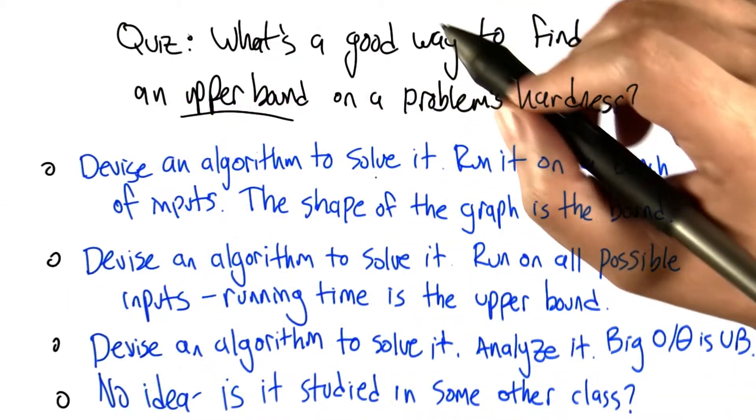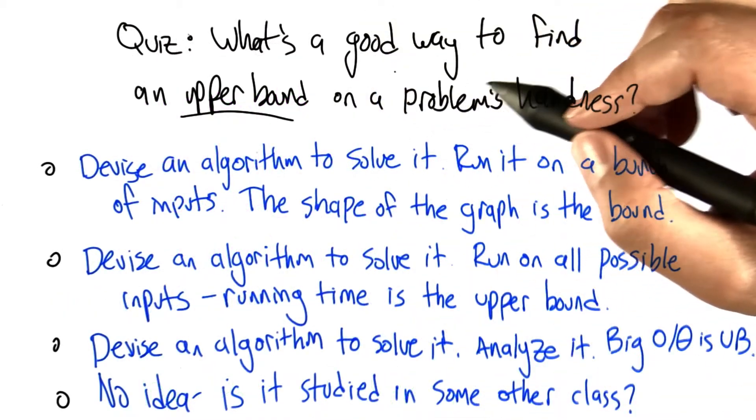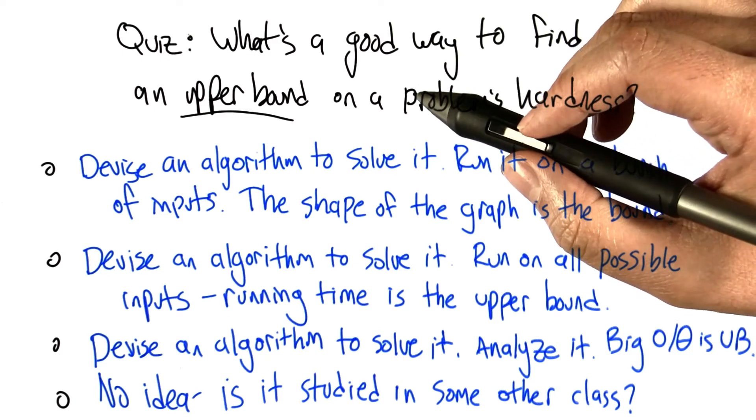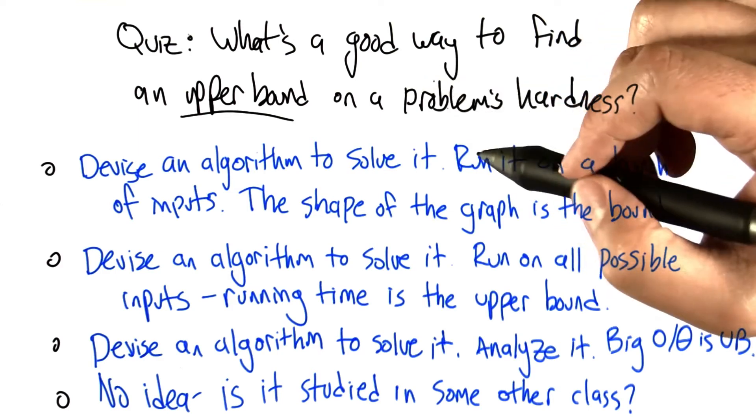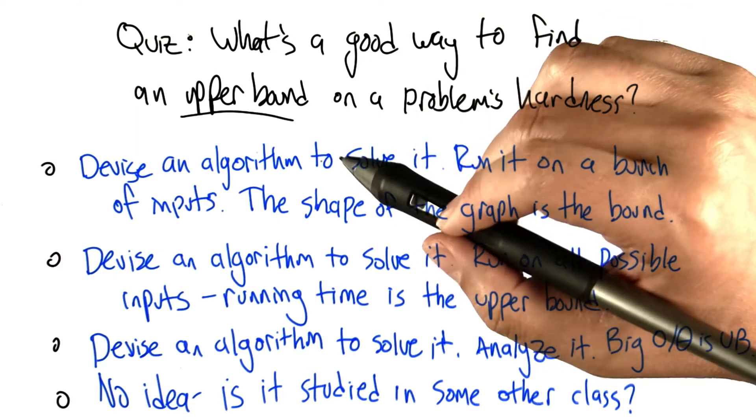So here's a question for you. What's a good way to find an upper bound on a problem's hardness? If we know an upper bound and a lower bound, that gives us a sense of how hard the problem is. How do we find an upper bound? So here's some choices.